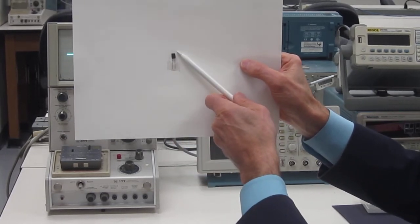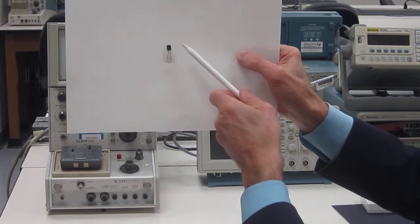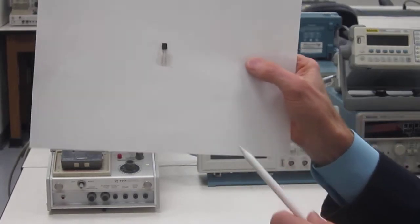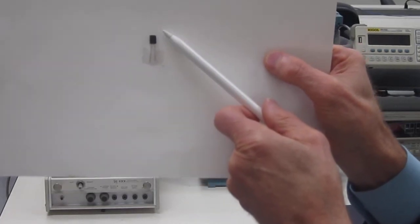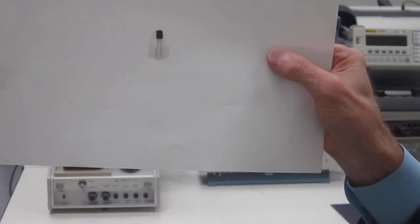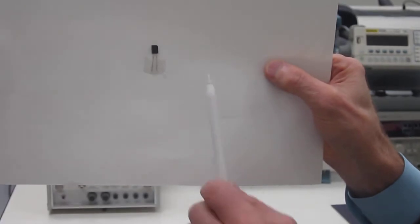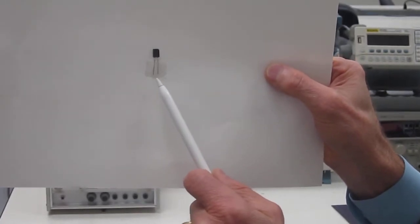One of them is this chamfer or bevel on this upper, I'm going to move it a little closer so you can see that. You can see that bevel there in this corner. That indicates that that is the cathode side or the negative side.